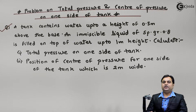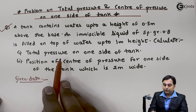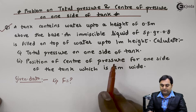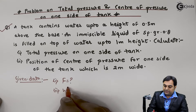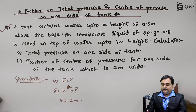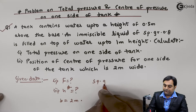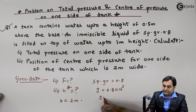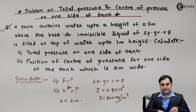Let us get started. The question is to calculate total pressure — total pressure is nothing but hydrostatic force acting on one side of the tank — and the second part is the position of center of pressure, denoted as h-star. The width of the tank B is equal to 2 meters. The immiscible liquid has specific gravity 0.8, so density equals 0.8 × 1000, giving a density of 800 kg per meter cube.